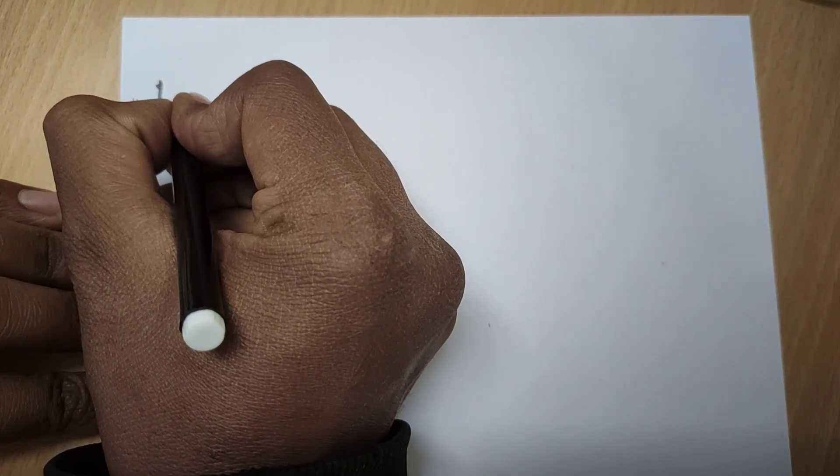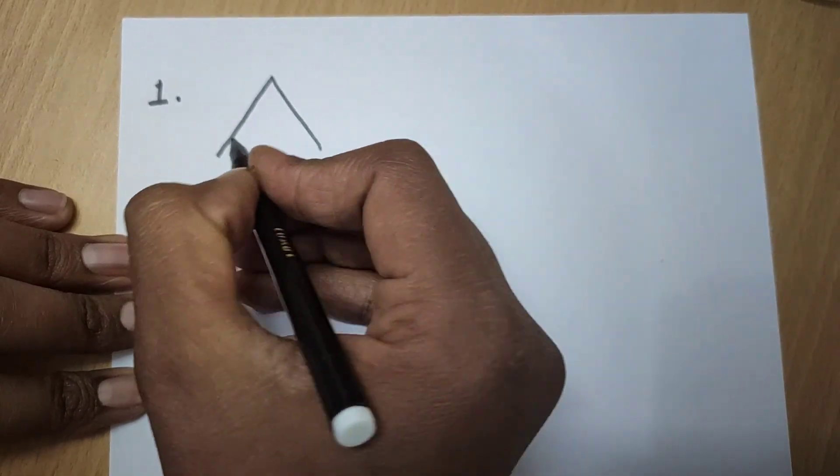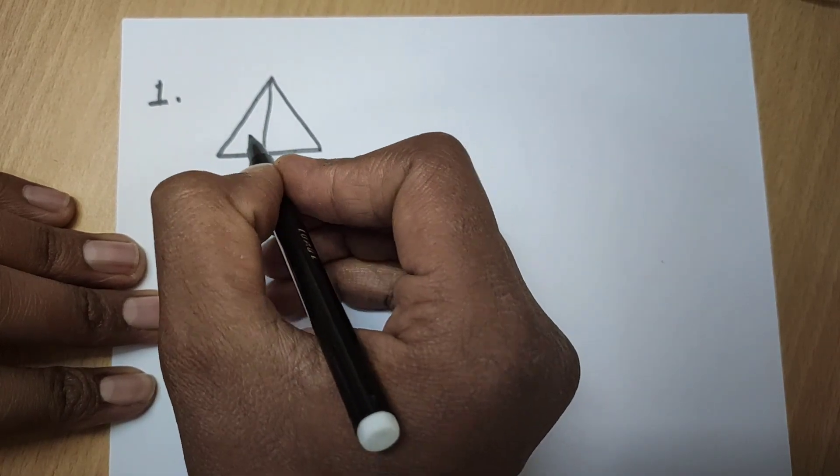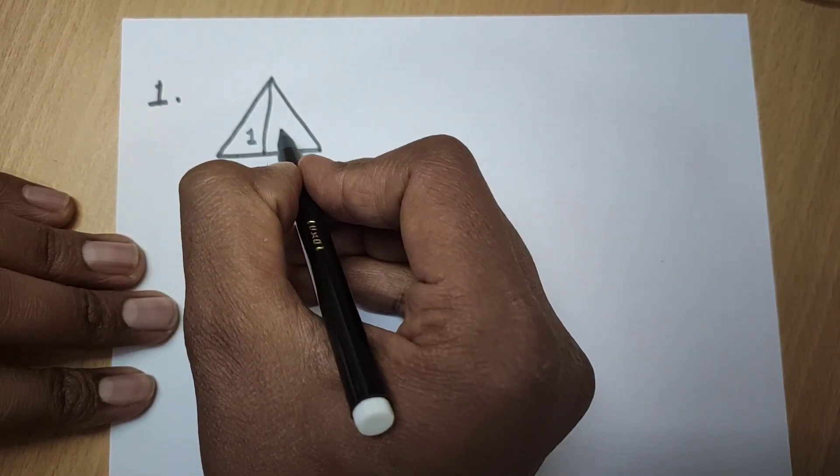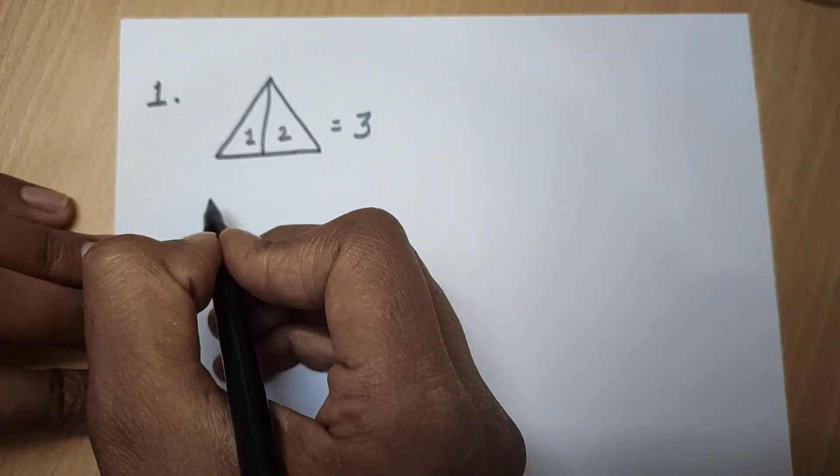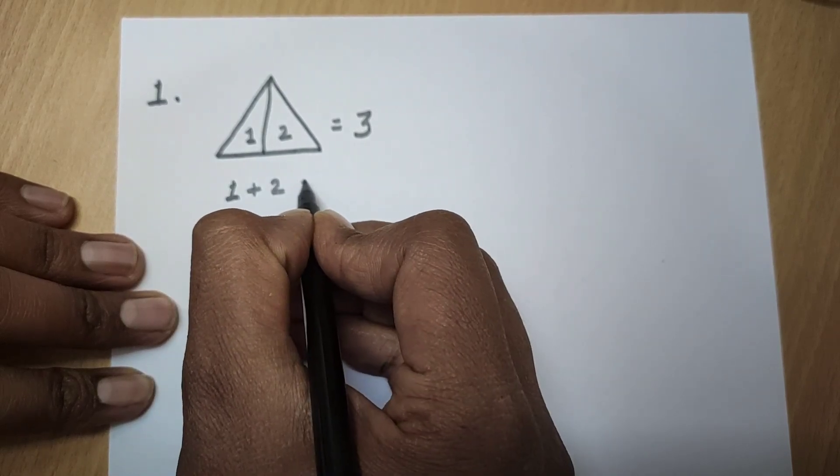Let's take one first question, easy. If I ask you how many triangles are in this figure, you will easily tell 1, 2 and 1, 3. So you will tell total 3. Okay guys, but you can do this 1 plus 2 is equal to 3.